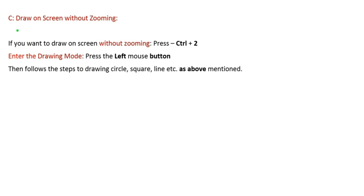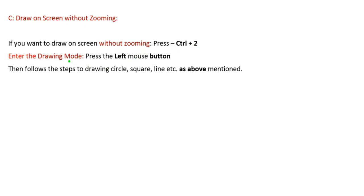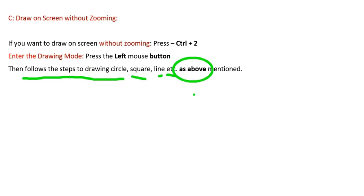Moving further, we can also draw without the zoom mode. Simply press Ctrl+2 to enter the drawing mode directly. Once in drawing mode, you can do anything mentioned earlier — draw shapes, write text, and more.